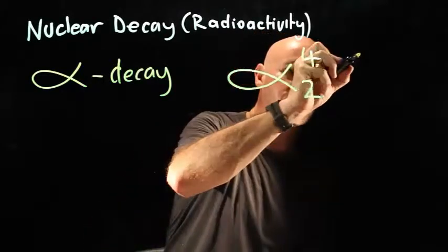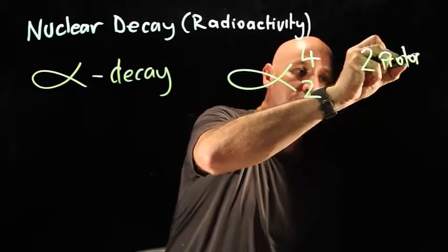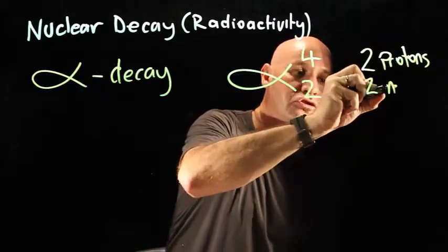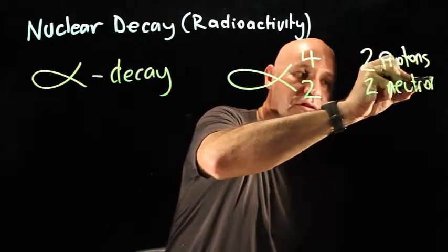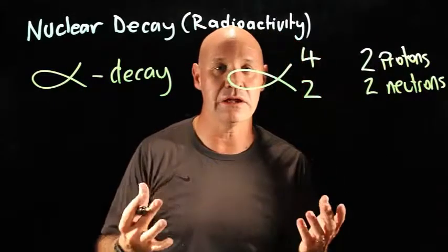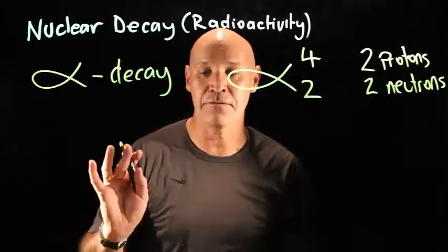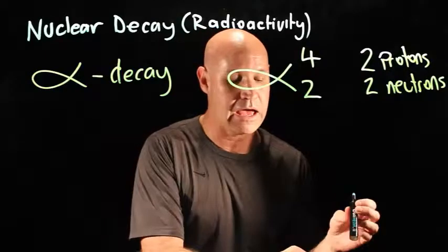So that means it's got two protons and two neutrons. It's often described as being a helium nucleus. So it's the heavier elements that undergo alpha decay.